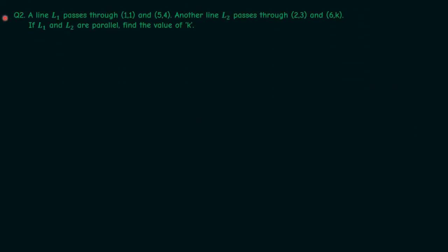Next question. A line L1 passes through (1,1) and (5,4). Another line L2 passes through (2,3) and (6,k). If L1 and L2 are parallel, find the value of k.